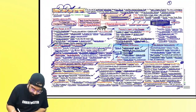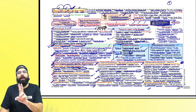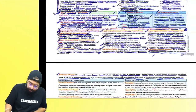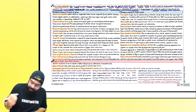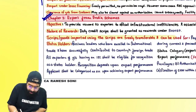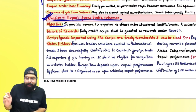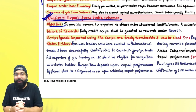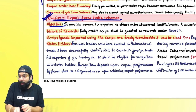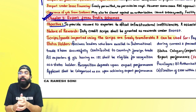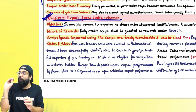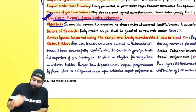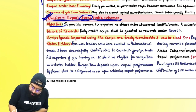Chapter 1 covered legal framework; Chapter 2 covered general provisions regarding import and export. Chapter 3 is Export from India Schemes. The government shows exporters 'chocolate' — benefits and rewards — to motivate them to export. The objective is to provide reward to exporters to offset infrastructural inefficiencies and associated costs. The nature of the reward is a duty credit script granted under RODTEP.